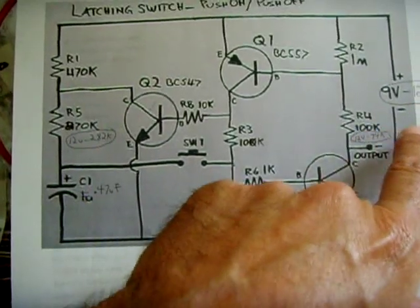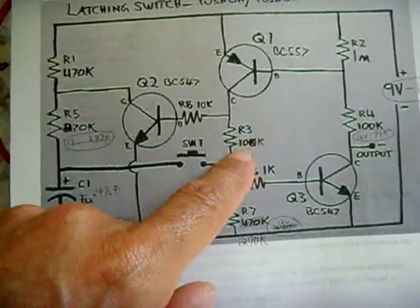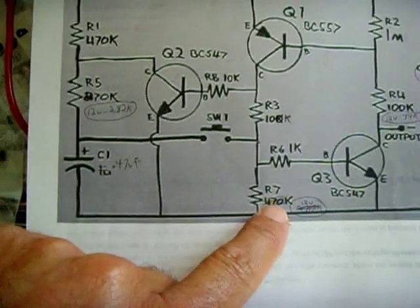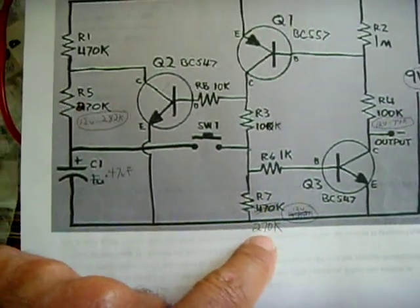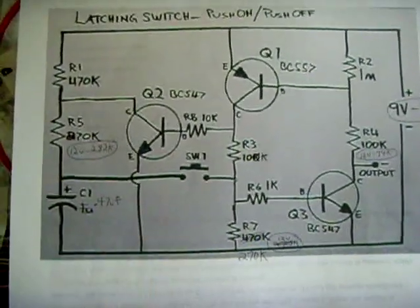It works fine at 9 also, but I prefer 12. This value here, I went from 10k to 100k, and the 470k is now 270k. After doing all that, now it works perfect. I'll demonstrate.